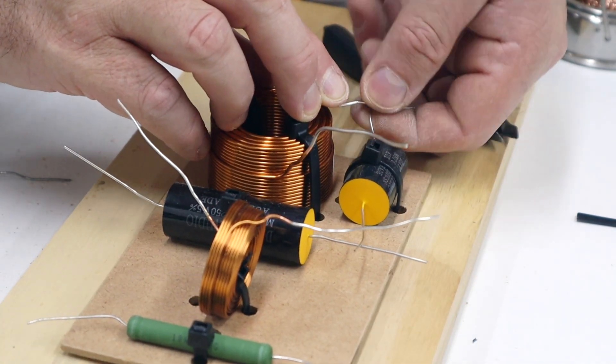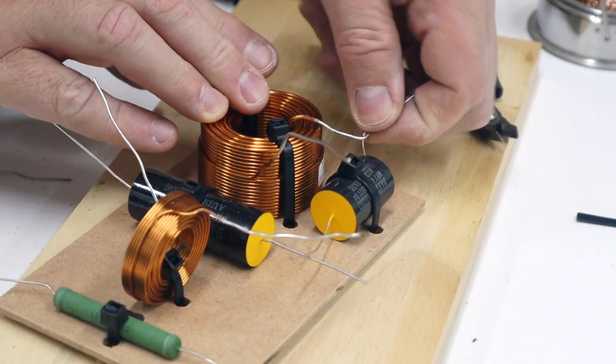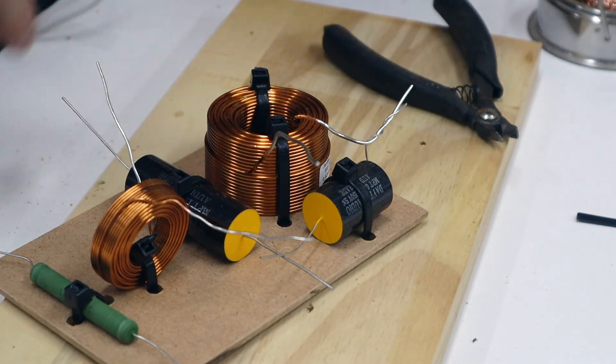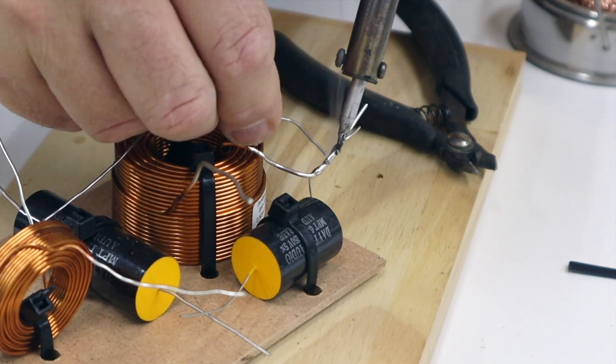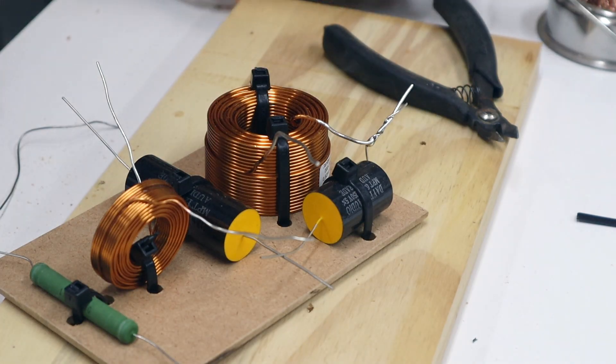Component leads can be twisted together according to the circuit diagram. Once twisted together and you have double checked all your components, solder is applied to the joints like this. Trim excess leads with a wire snip.